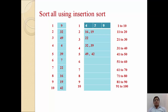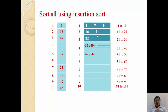We apply insertion sort to the second bucket — 16 and 19 are already in ascending order, so the result is 16 and 19. The third bucket has only one element, 22, so it stays as 22. The fourth bucket has 32 and 39, already in ascending order, so it remains 32 and 39. The fifth bucket has 49 and 42, which will be converted to ascending order: 42 and 49. The remaining empty buckets are skipped.